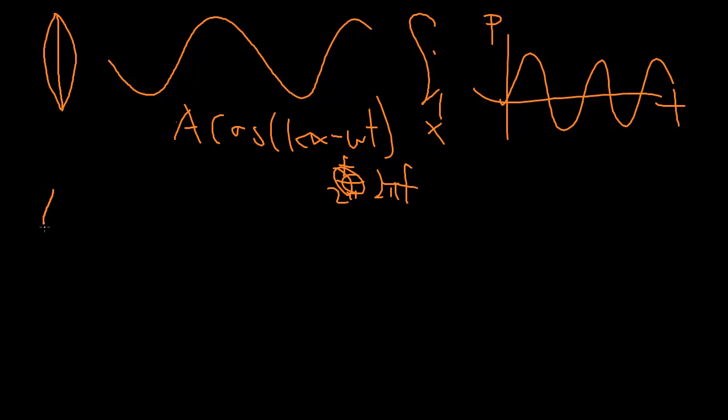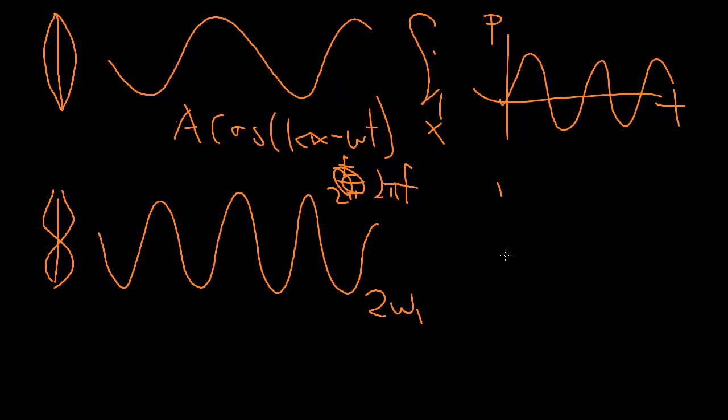But superposition happens, and say we have the second mode which vibrates at twice the frequency. So instead of kx - ωt, we have the omega now is twice the omega of the first one. So we'll also have a pressure over time graph that's going to be like that, and we add those up.